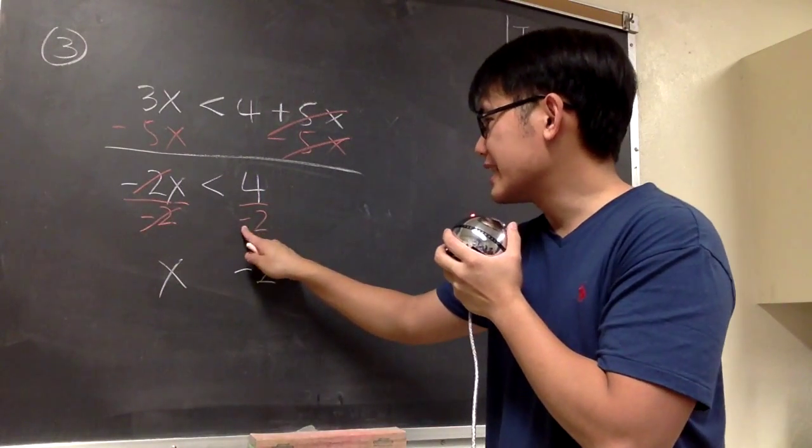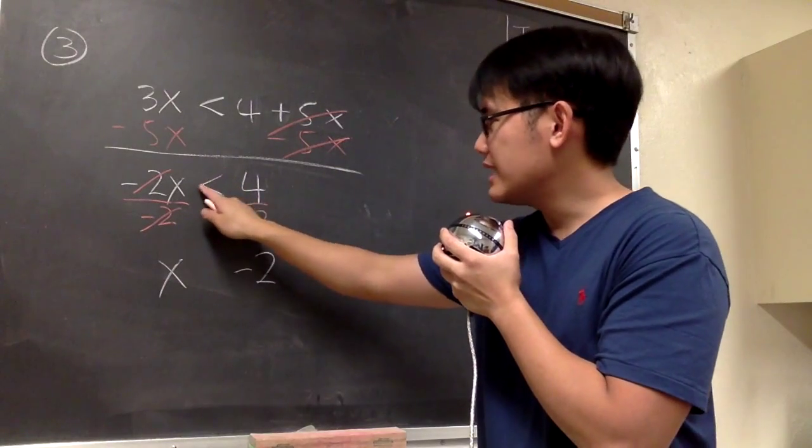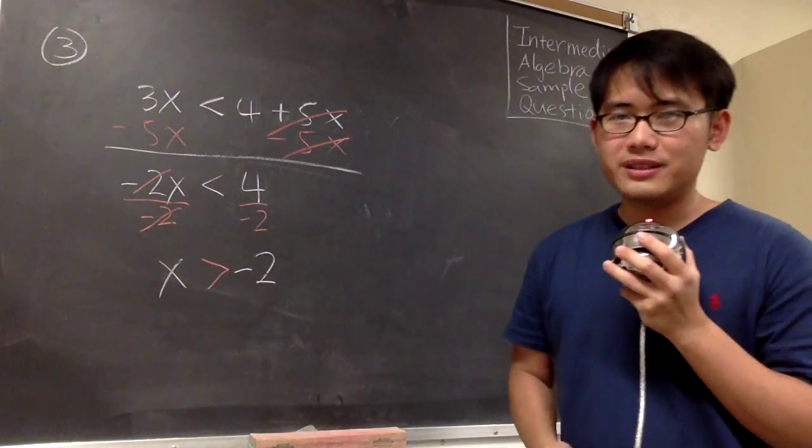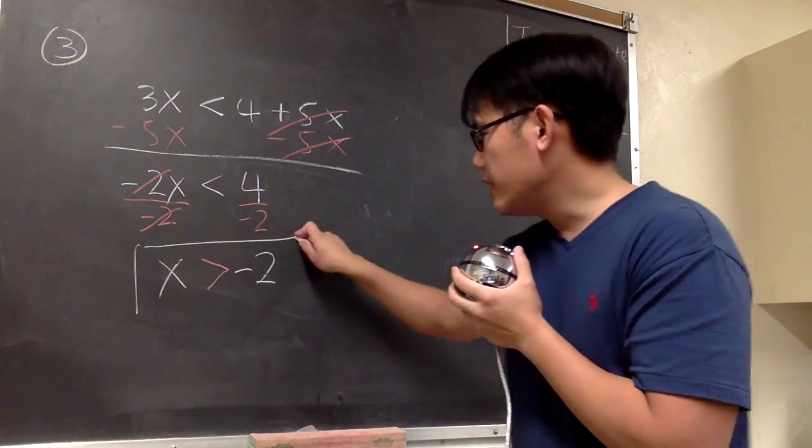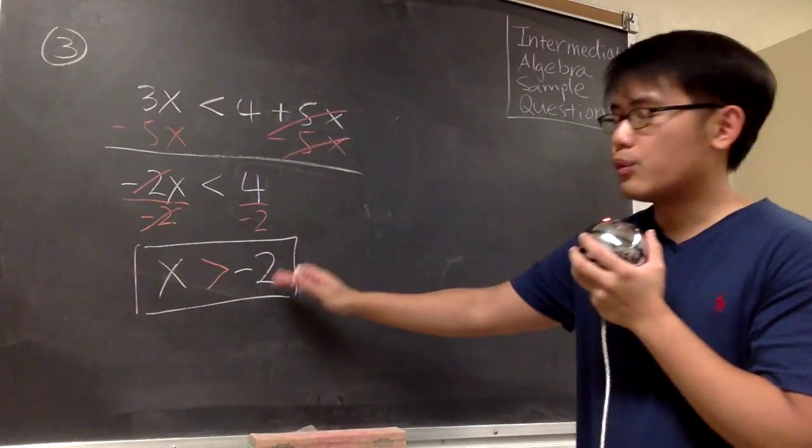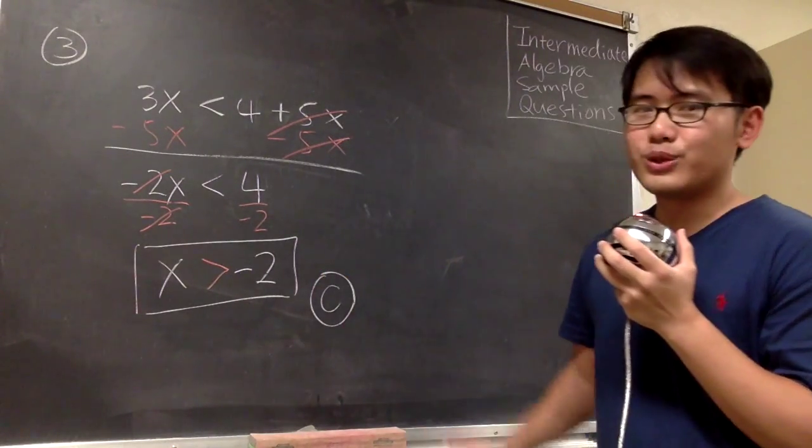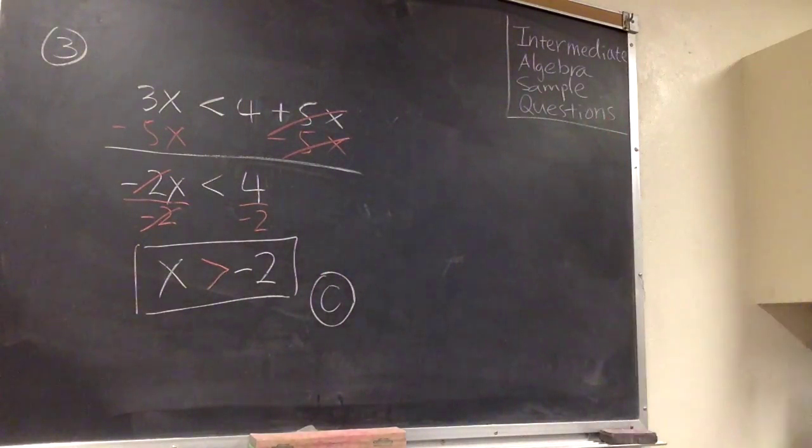Here we divide both sides by negative 2, so instead of a less than symbol, we will have a greater than symbol. We switch the inequality. So x is greater than negative 2. That will be the answer. This is answer choice C in the answer choices. That's it.